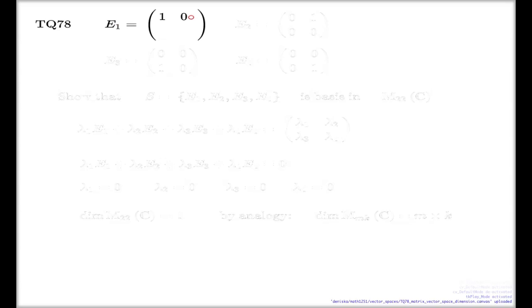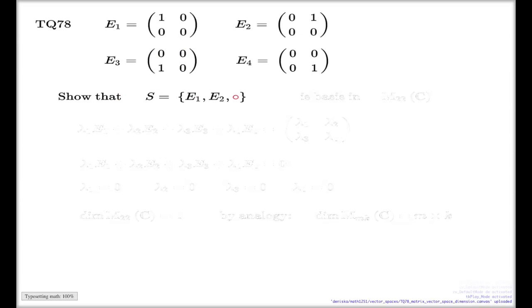The question says consider the following matrices: matrix E₁ of this structure, matrix E₂ of this structure, matrix E₃ of this structure, and finally matrix E₄ of the structure like this. The question goes to ask, show that if you take a system of these matrices as vectors, this will be basis in this vector space, the vector space of 2×2 matrices with complex entries.